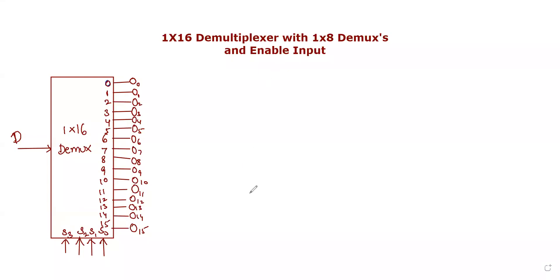Hello students. In this video I will explain how to implement a 1 by 16 D multiplexer with 1 by 8 D multiplexers and enable input. You could have a big size D multiplexer implemented using small size D multiplexers and enable input.